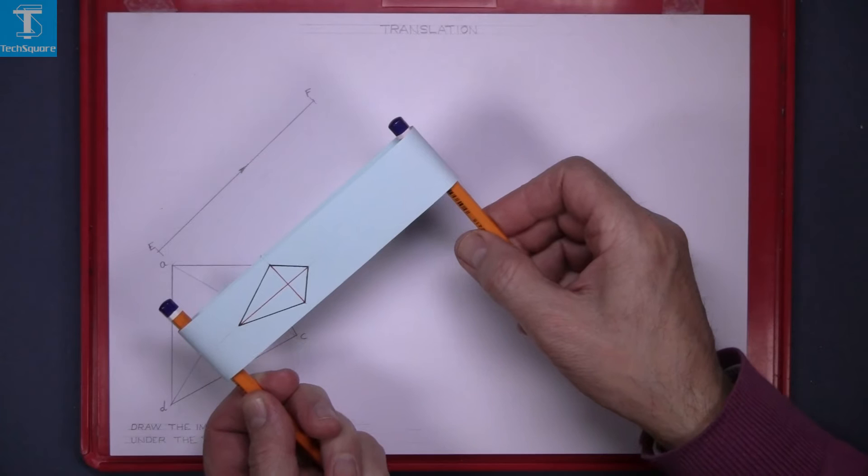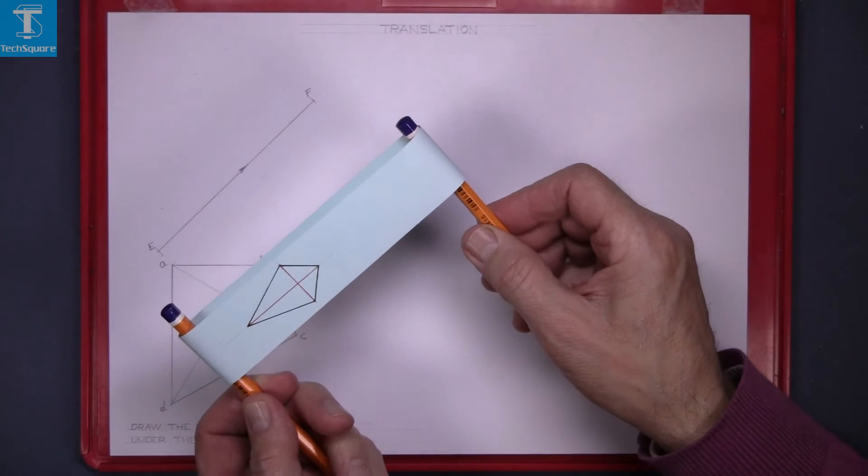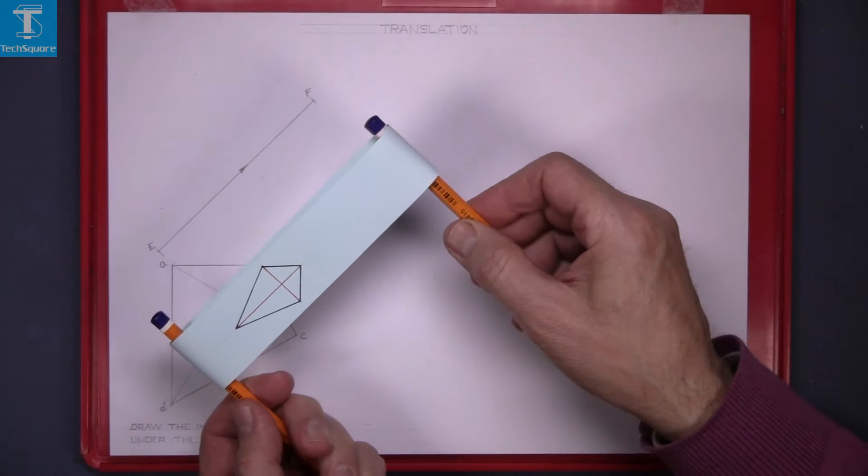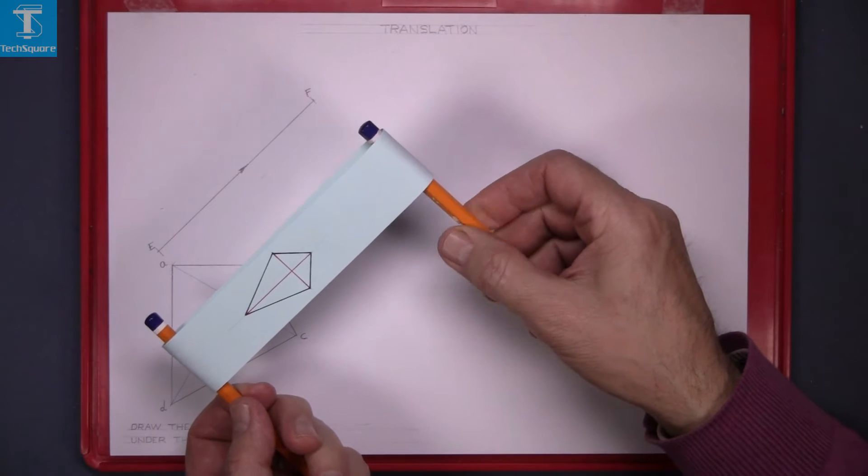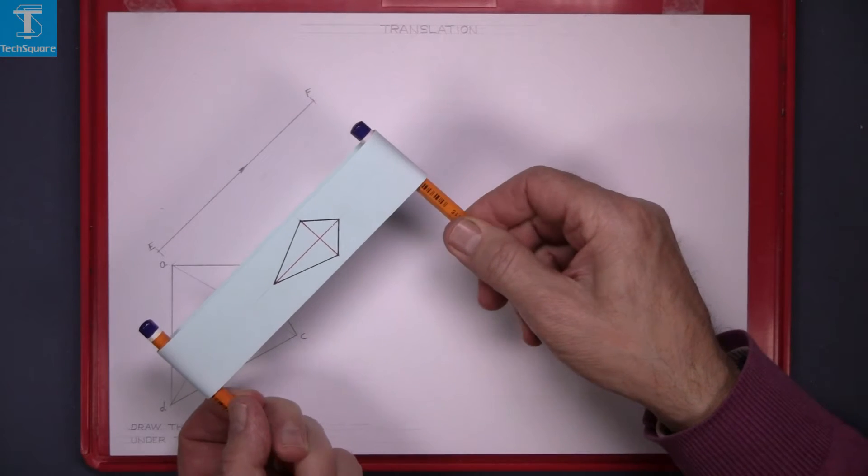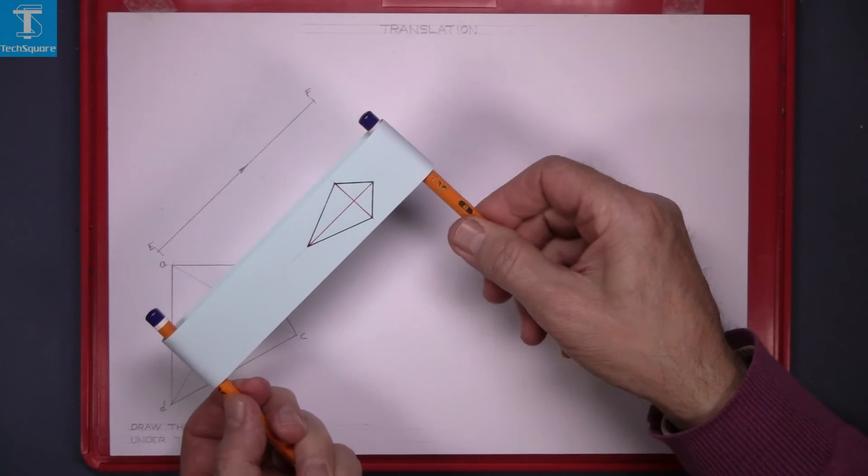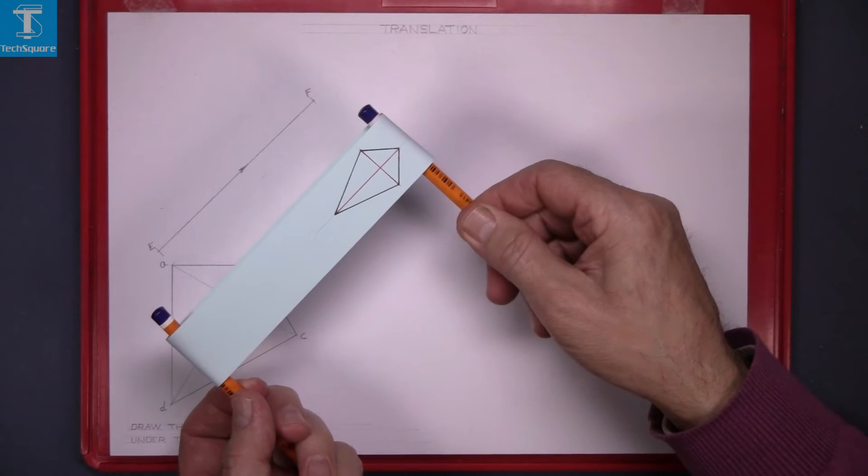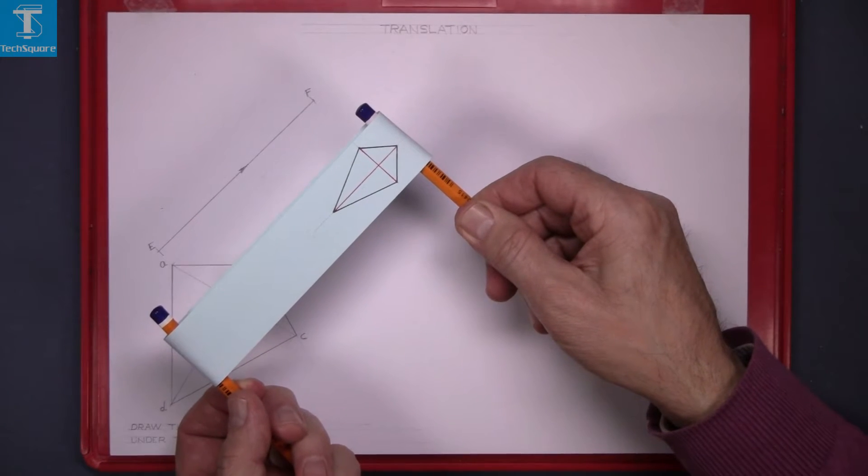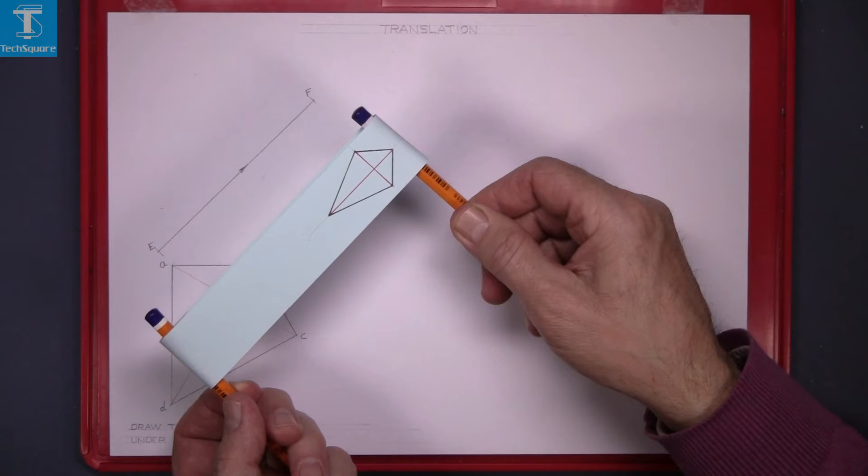This here is a piece of paper wrapped around two pencils. As I rotate the pencils the image moves forward and that's moved under translation.